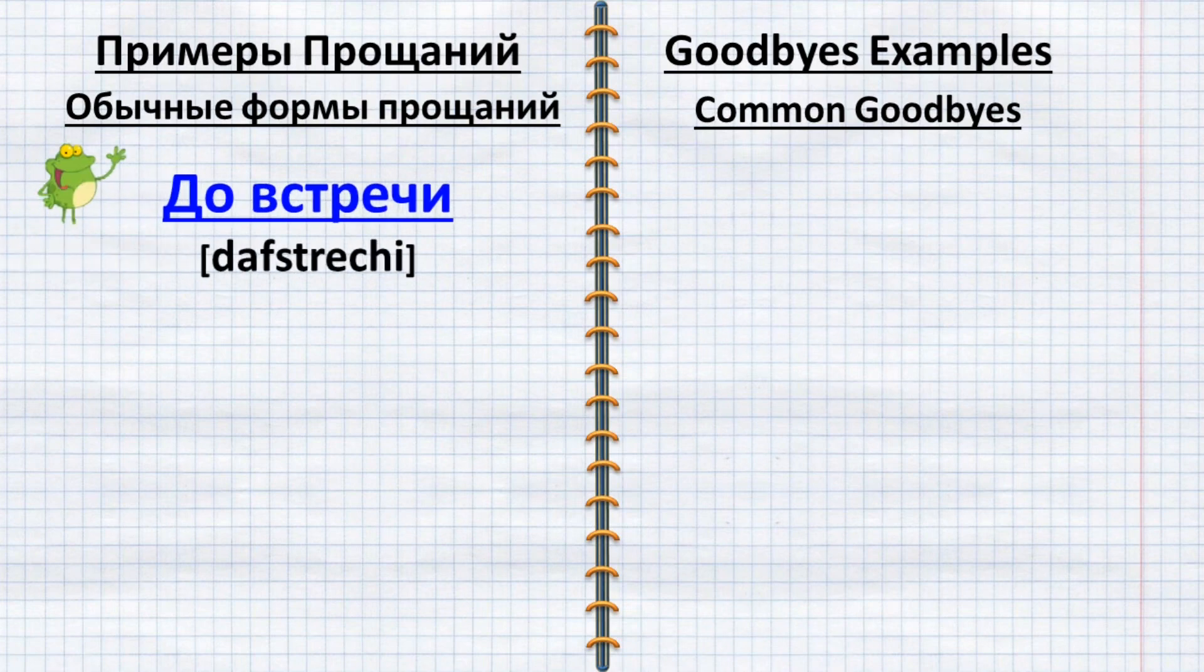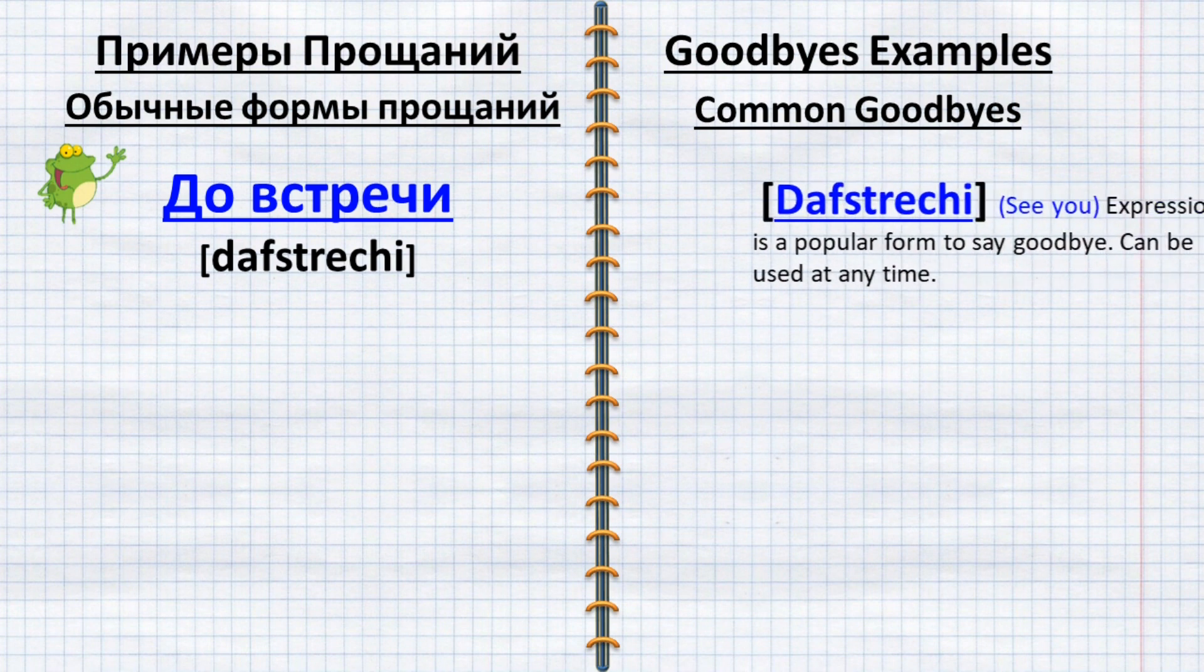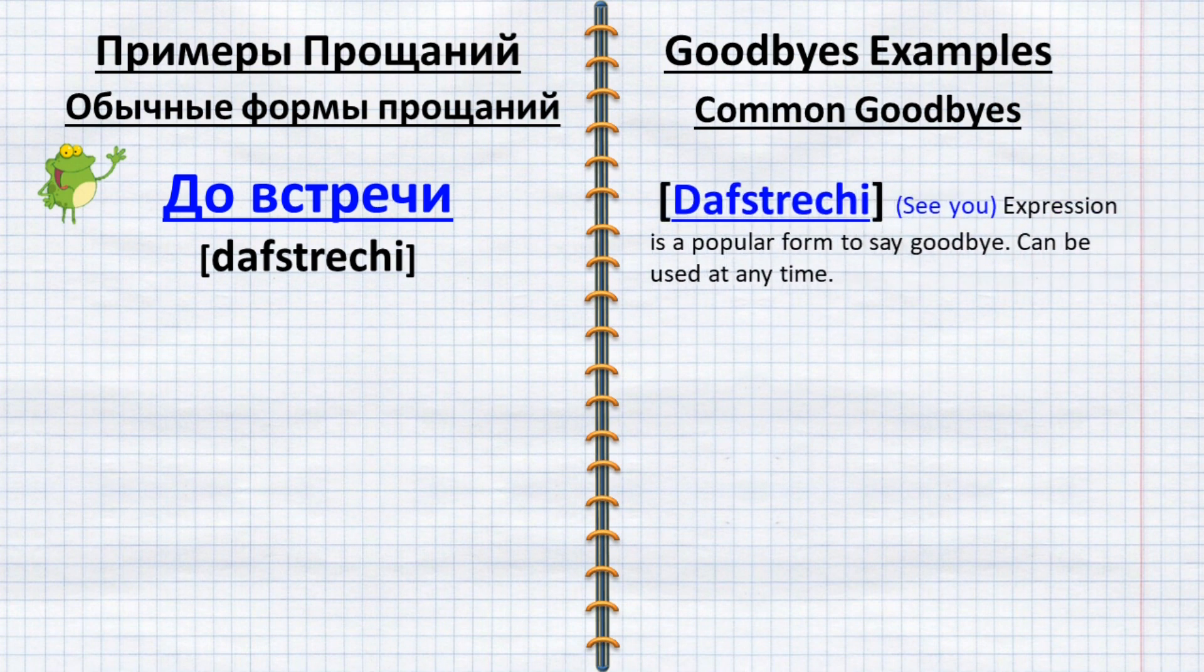До встречи. До встречи. It means see you. This expression is a popular form to say goodbye in Russia and can be used at any time.